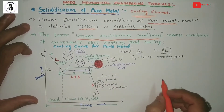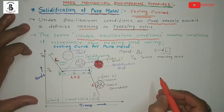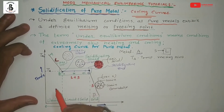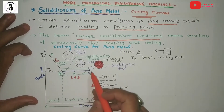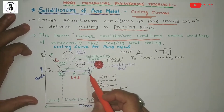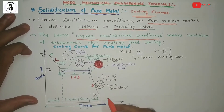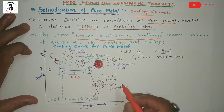Now, according to the Gibbs Phase Rule, one can find out the degree of freedom for each portion — A to B, B to C, and C to D — and validate the Gibbs Phase Rule. Here we are considering the modified Gibbs Phase Rule: P + F = C + 1. Here we are considering that only temperature and composition are the variables.